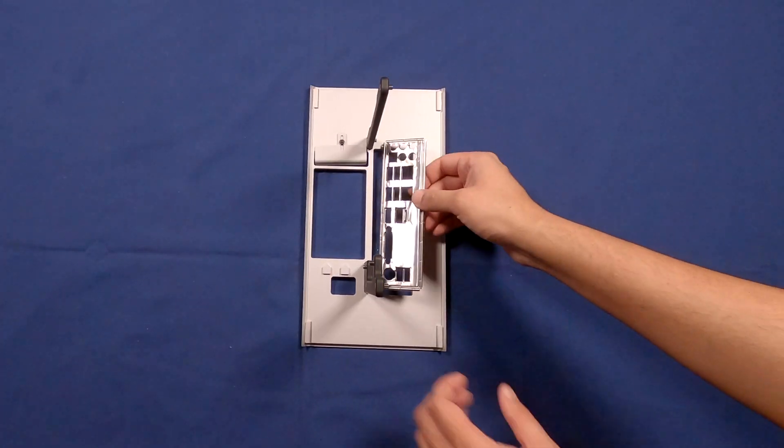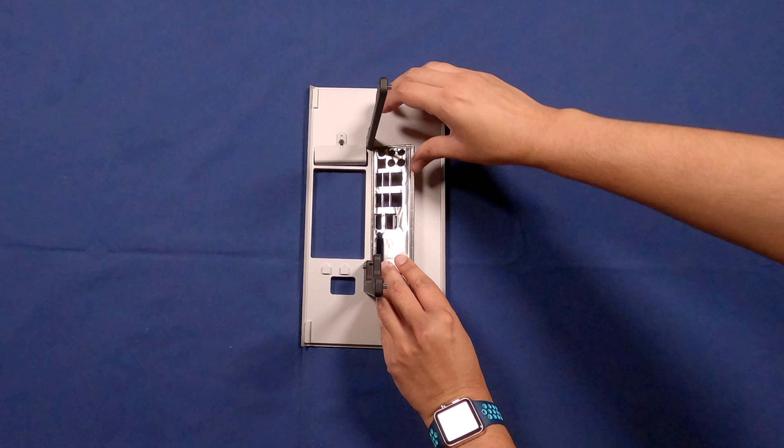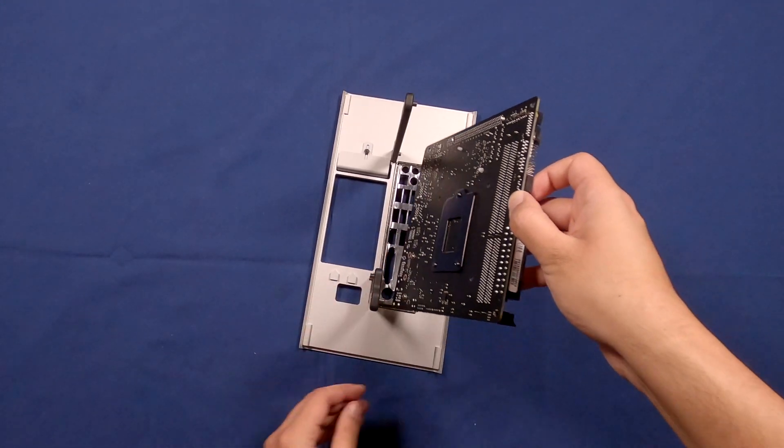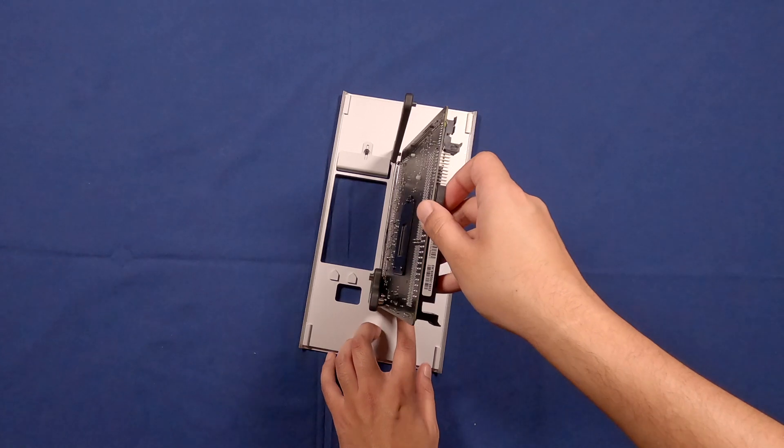The next thing we're going to do is add the IO shield for the motherboard. After that you can go ahead and put the motherboard in place by screwing it onto the standoffs.